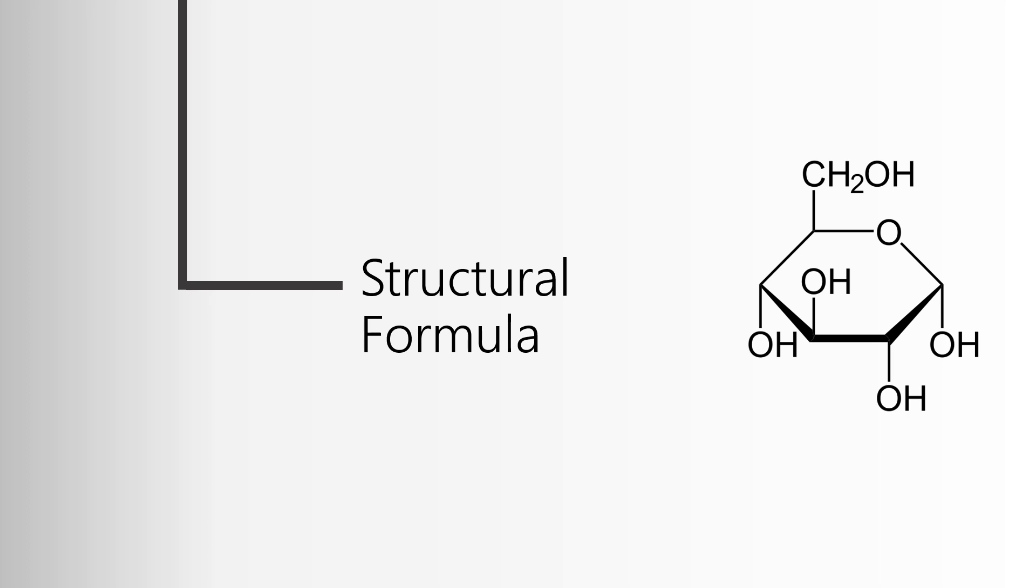Last we have what's called a structural formula. A structural formula is an attempt to show how the atoms are interconnected to each other. This is that same formula C6H12O6 depicted in what we call a bond line structure. All of the angles that don't have a designation are carbons. Then you can see the oxygens and hydrogens attached to them.